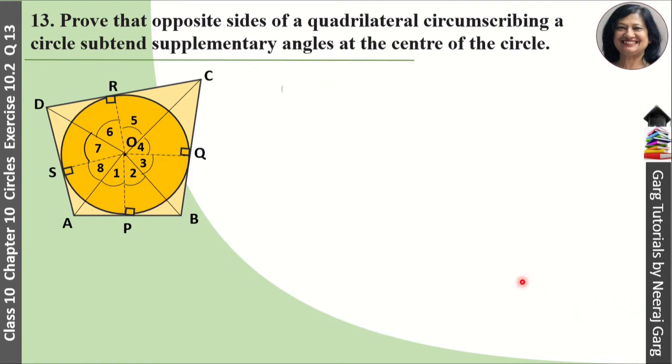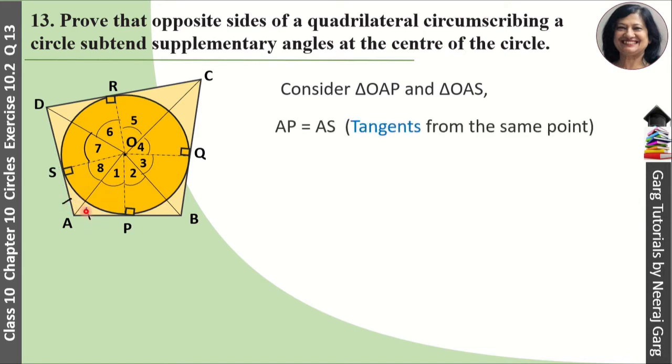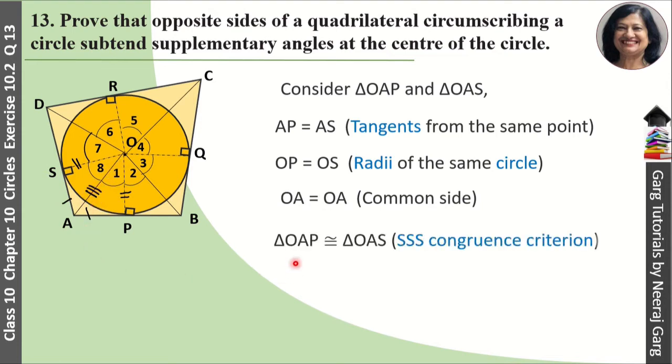Now consider triangle OAP and triangle OAS. We know that AP equals AS, as we just proved these are equal tangents. OP equals OS since both are radii of the same circle. And OA is common to both triangles. Therefore, triangle OAP is congruent to triangle OAS by SSS congruency criteria.